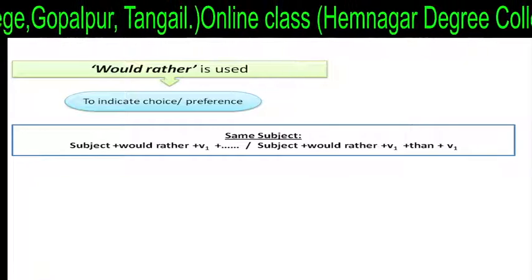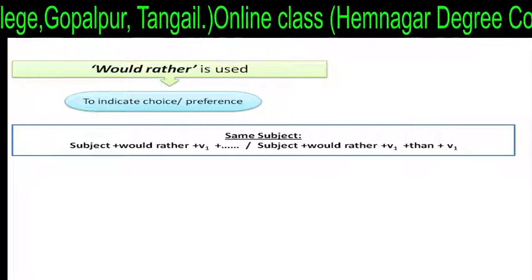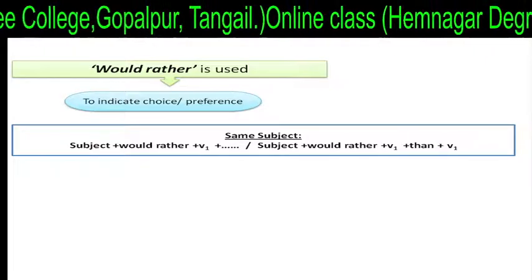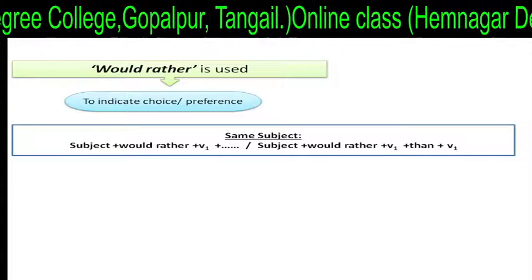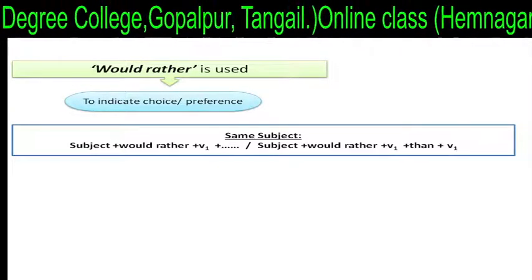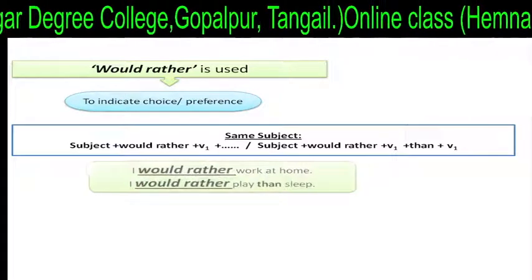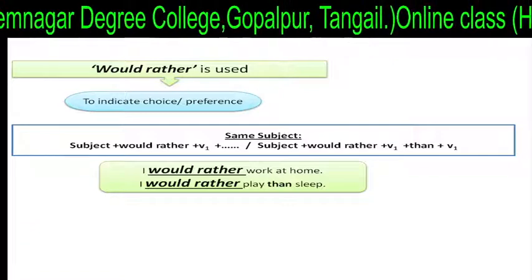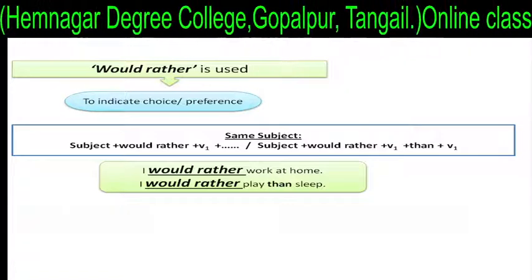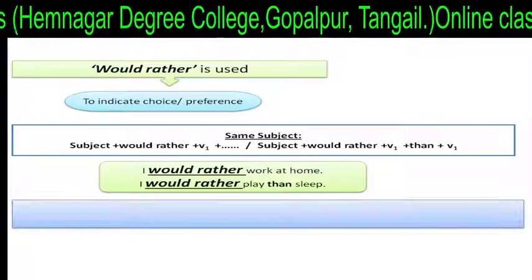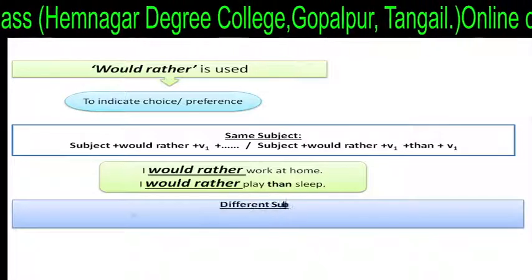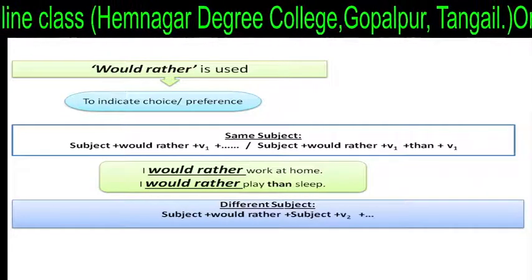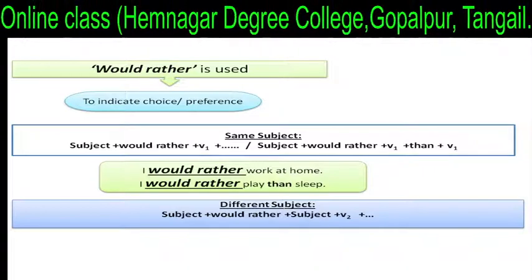Would rather is used to indicate choice or preference. Structure one: subject plus 'would rather' plus V1 plus extension. Or subject plus 'would rather' plus V1 plus 'than' plus V1. For example: 'I would rather walk at home.' 'I would rather play than sleep.'